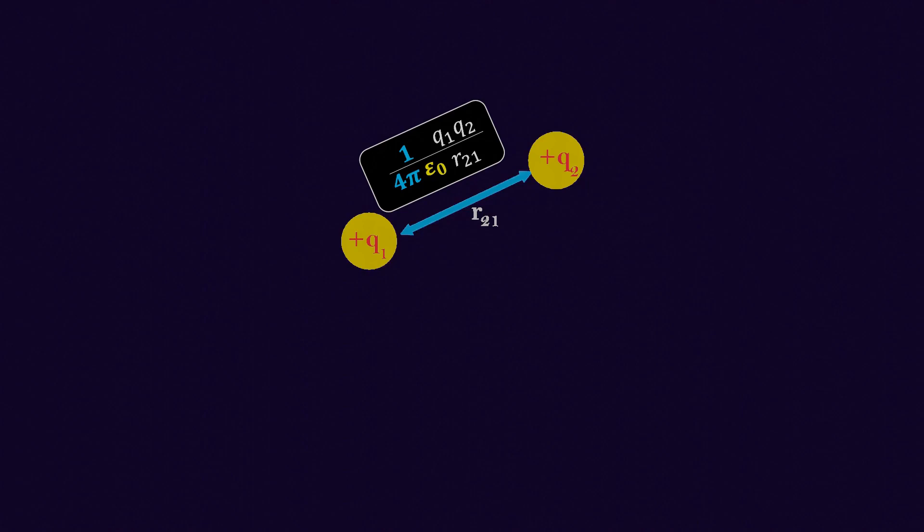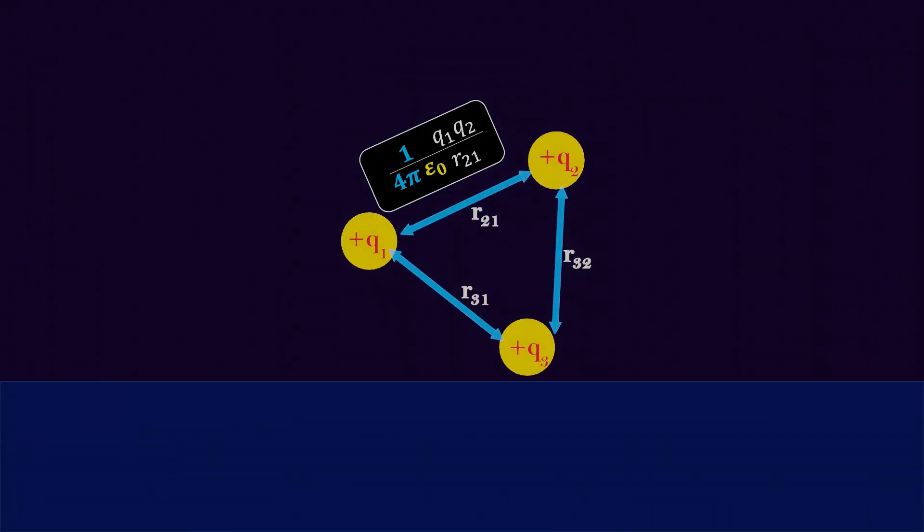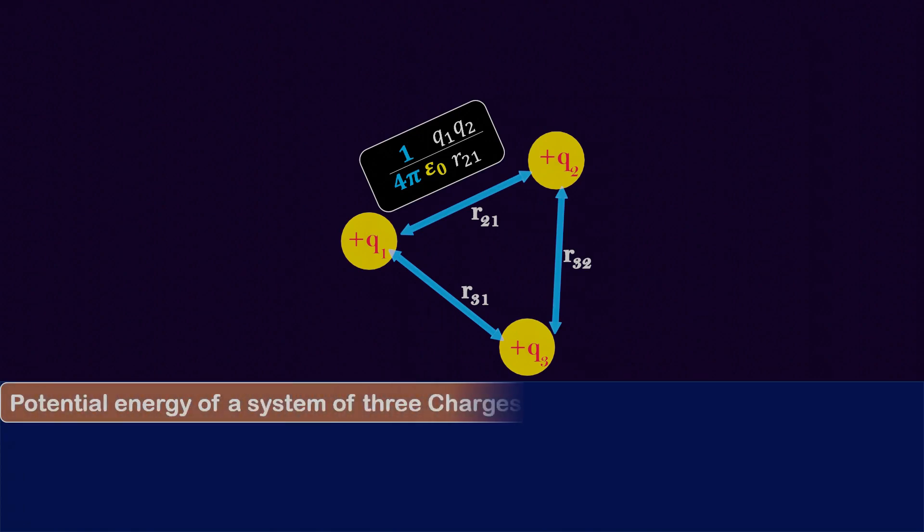Now using this equation, we can calculate the potential energy of a system of three charges. Let's understand this by bringing another charge q3 close to q1 and q2, where q3 is at distance r31 from q1 and r32 from q2. We will assume that q3 has also been brought from infinity to this position. Now it is time to calculate the mathematical expression for the potential energy of a system of three charges, which is quite simple.